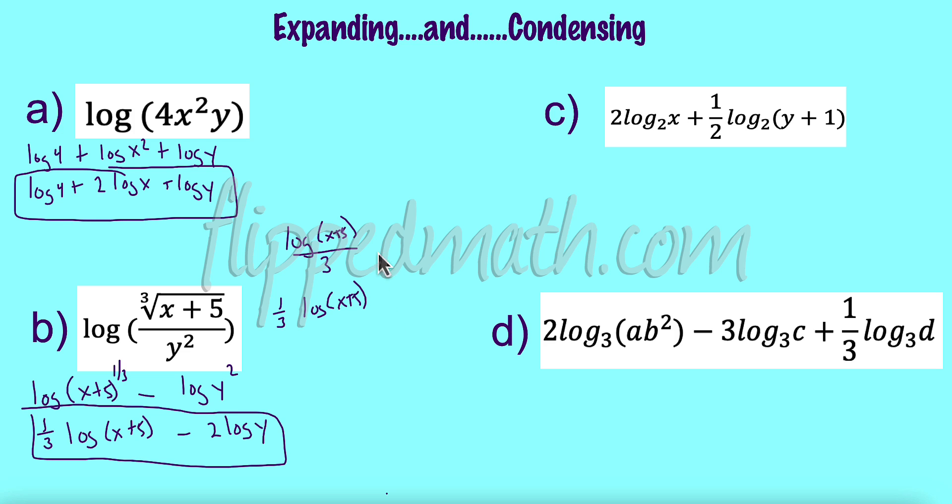All right. So let's condense. So expand, I make them as many, as far out as I can. I use as many properties as I can. Condensing, I want to get one single logarithm down. So down here, the first thing I did, I did the powers last. This is backwards. I'm going to do the powers first. So I have a two times that. So I'm going to now going to put that as a power. So that's log base two of X squared plus log base two of Y plus one to the one half.